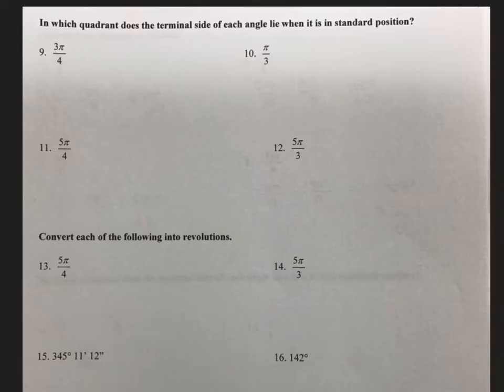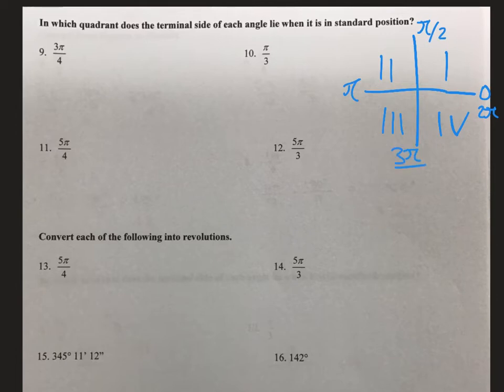Okay, now we are going to look at which quadrant the angle lies in. So just as a reminder, our quadrants are 1, 2, 3, and 4. Over here, we have 0 and 2π. Up here, we have π divided by 2, π, and 3π divided by 2.